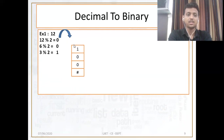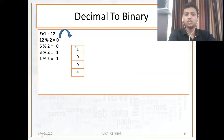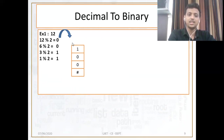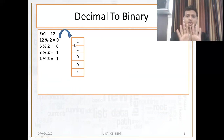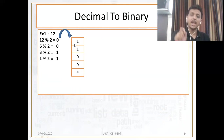Now the next step: 1 mod 2 is equal to 1. This is our last step because we get quotient 1. So now again push this 1 inside the stack. The pushing operation is done. Now just do the pop operation — popping out each and every element from the stack and appending it with the output string.